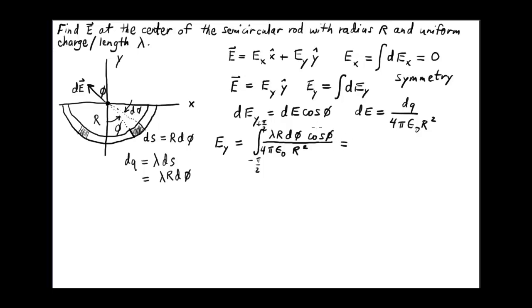This simplifies, of course, because we see that the r in the numerator and the r squared in the denominator simplify. So we'll write this as lambda over 4 pi epsilon zero r times this integral of simply cosine phi d phi from negative pi over 2 to positive pi over 2. Integral of cosine is simply sine.